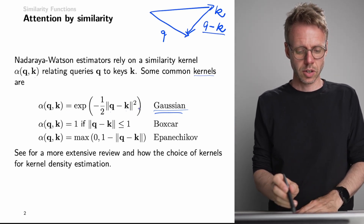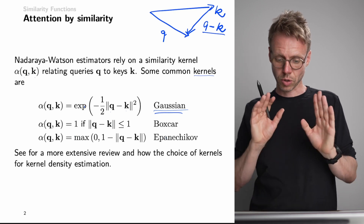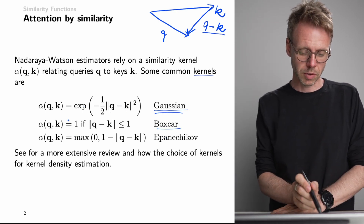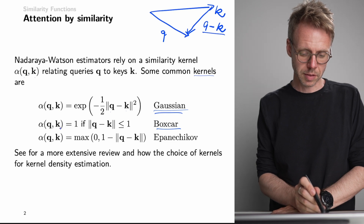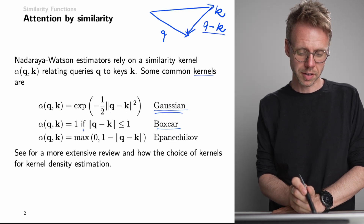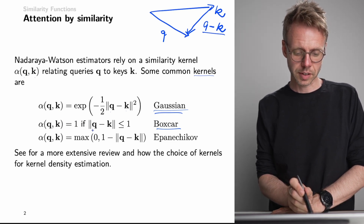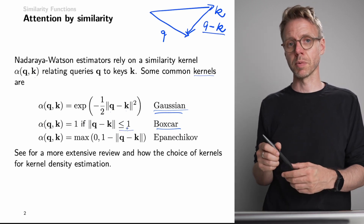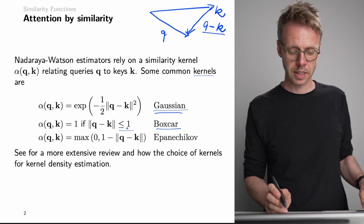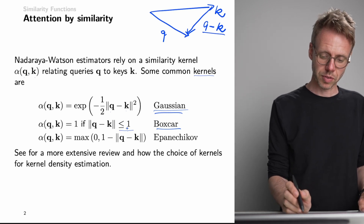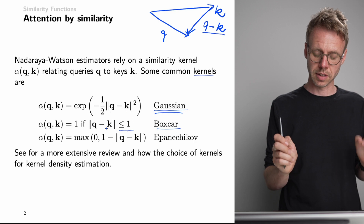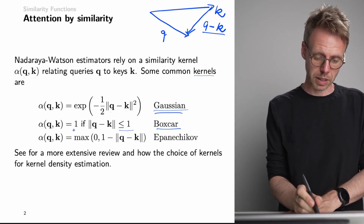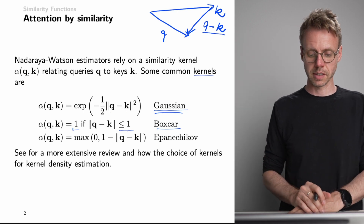A second kernel is the so-called box-car kernel. This box-car kernel becomes one if the norm is small — specifically if it lies within the unit ball. So if the query and the key are close together, this becomes one, and otherwise zero.